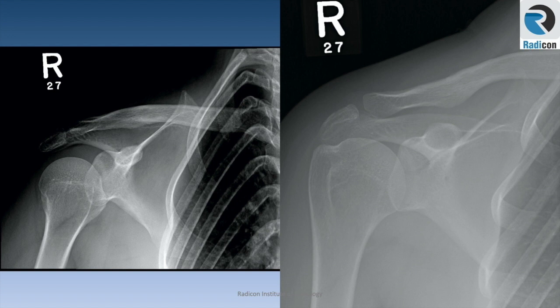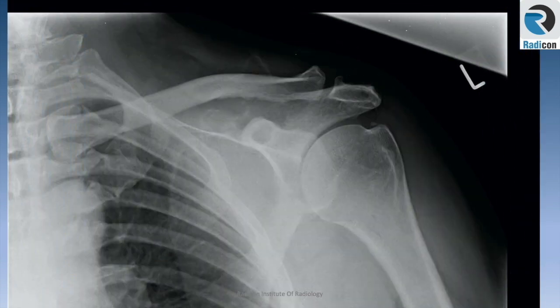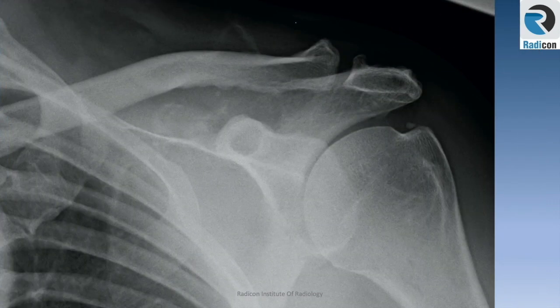Case 34. Left shoulder AP view. The glenohumeral joint appears normal with an intact clavicle. Zooming up reveals some degenerative changes, probably in the rotator cuff and AC joint — not criteria for calling it abnormal in rapid reporting. But there seems to be some abnormality in the scapula. Zooming further reveals a lytic lesion in the superior aspect of the left scapula, with significant bony destruction and soft tissue calcific changes — a malignant tumour is present.